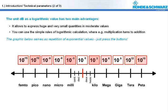Without dBs, the only way to express huge and small quantities is to use prefixes for exponential values, as you can see in the graphic by pressing the buttons.